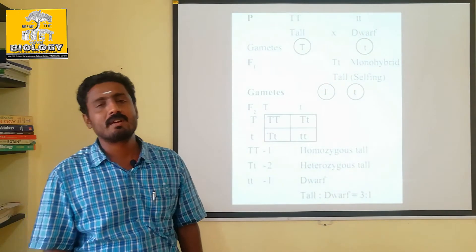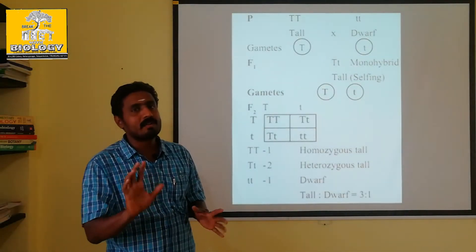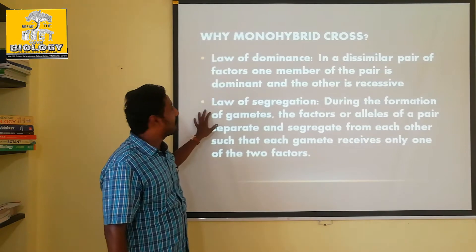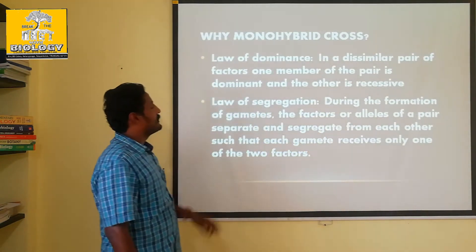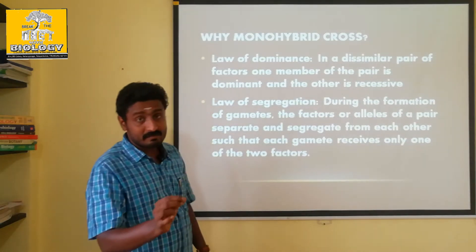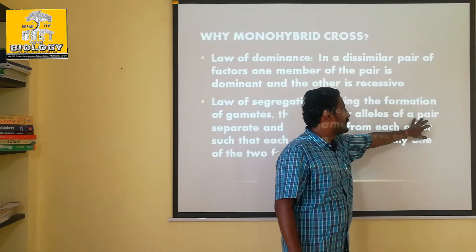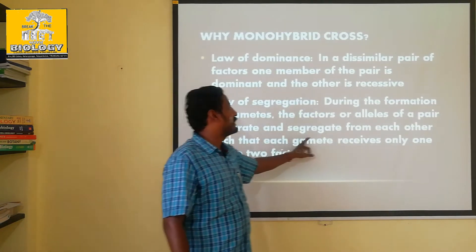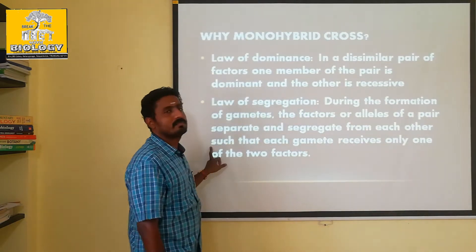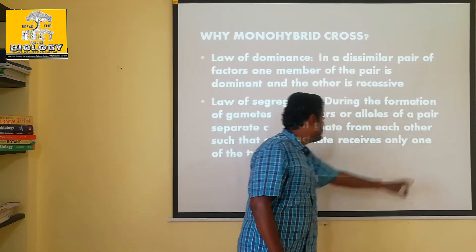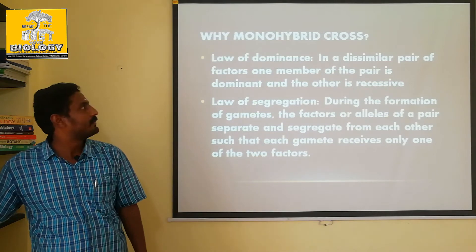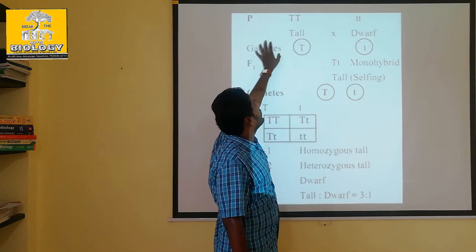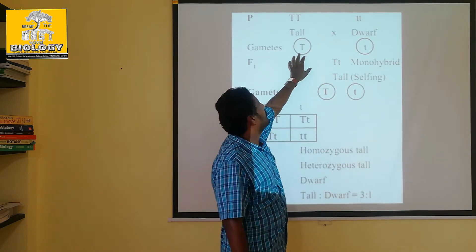Law of segregation. The law of dominance and the law of segregation. During the formation of gametes, the factors of alleles, the factors of alleles of a pair — the factor in one pair separates and segregates from each other. Each gamete receives only one of the two factors. One factor is that in the gametes, you can get one of the two gametes, so you can get one of the two.